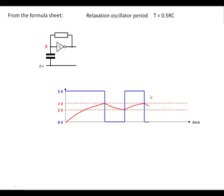Which makes the output drop to 0 volt and so on, and it's going to be a recurring pattern where the output is going to be going between 0 and 5 volts and X is going to be oscillating between 2 and 3 volts.